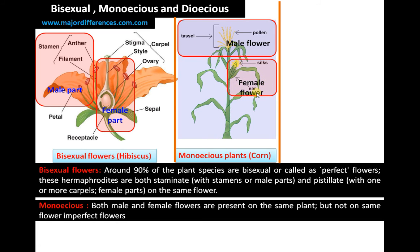Take the case of corn — it is a monoecious plant. Here you can see the female flower, called silks, and the male flower, which is called the tassel. So in monoecious plants there are both male flowers and female flowers, but the flowers are imperfect as all whorls are not present.